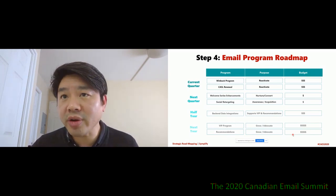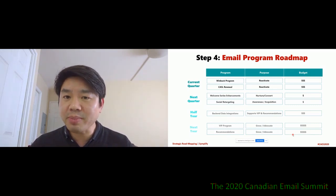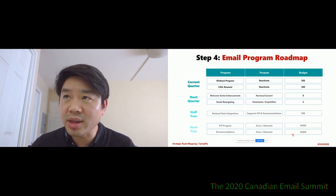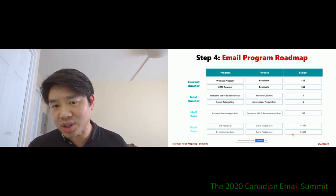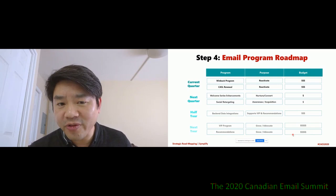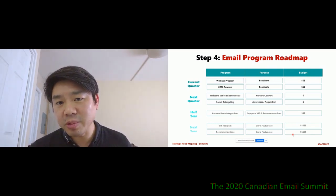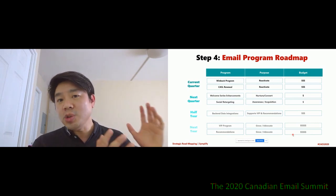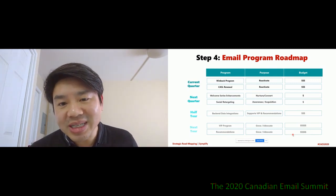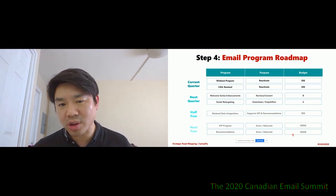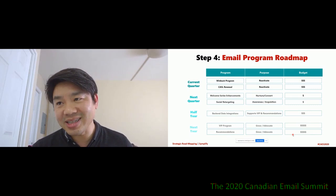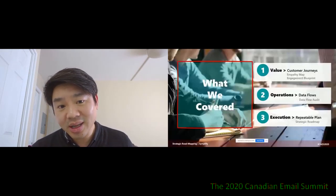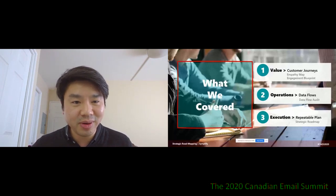So to conclude, what have we covered? We started off with value — we did that by exploring the customer journey with two frameworks: the empathy map and the engagement blueprint. We then looked at operations and the data flow because data often hinders innovation, and all we did was a data flow audit to find areas of weakness that we can now address and move the program forward. And by doing the fundamentals — steps one and two — we were able to identify candidates that we are excited to work on and really believe in. We were then able to put all of that into a repeatable plan that makes sense, can be executed, is realistic, and is achievable. And that is the strategic roadmap. Thank you very much, and I'll take your questions.